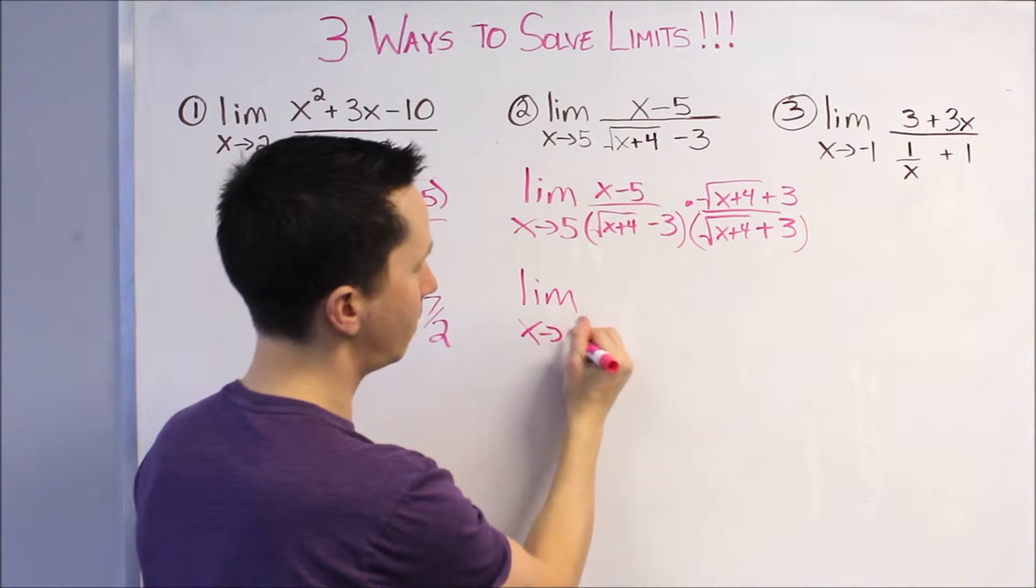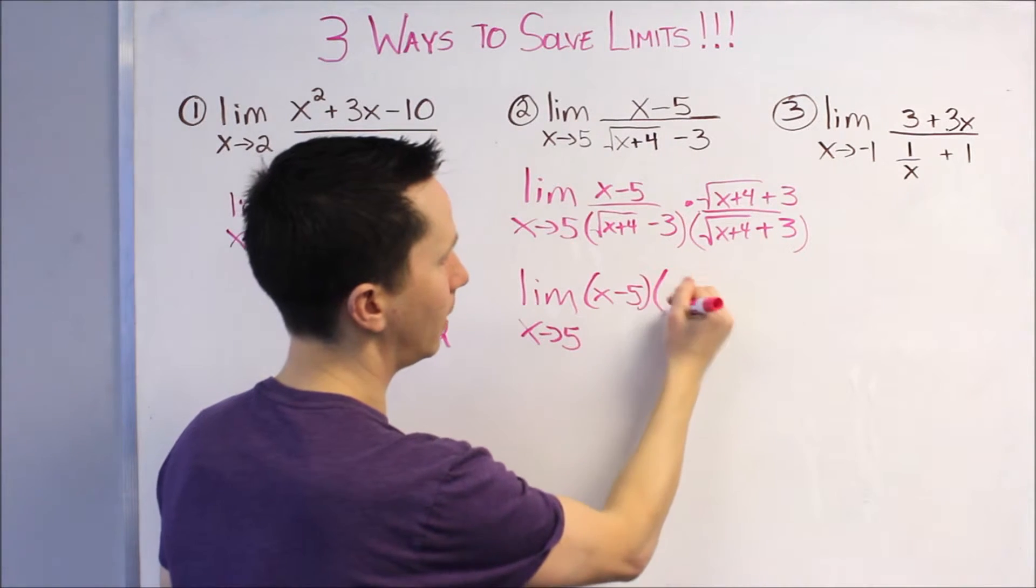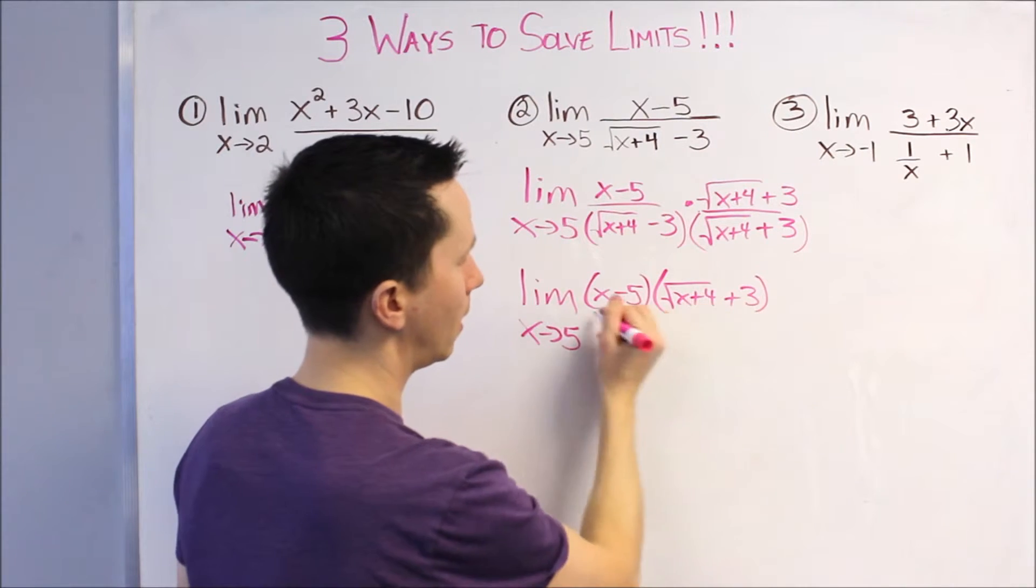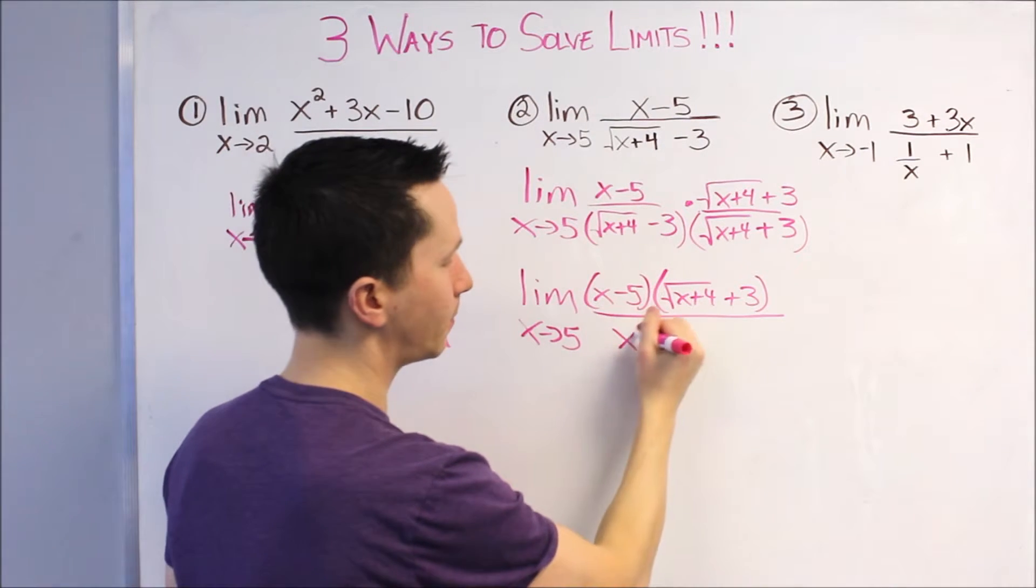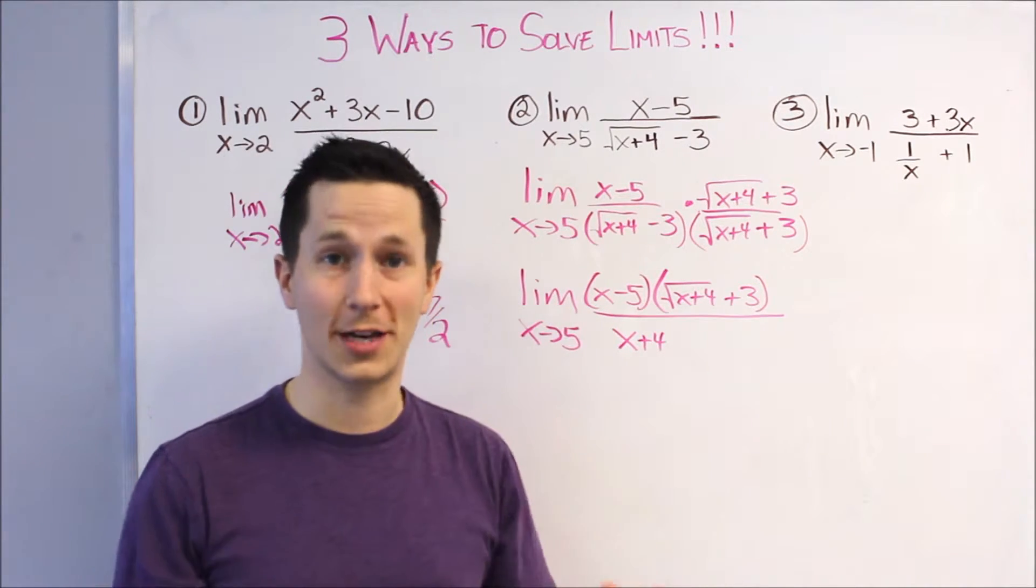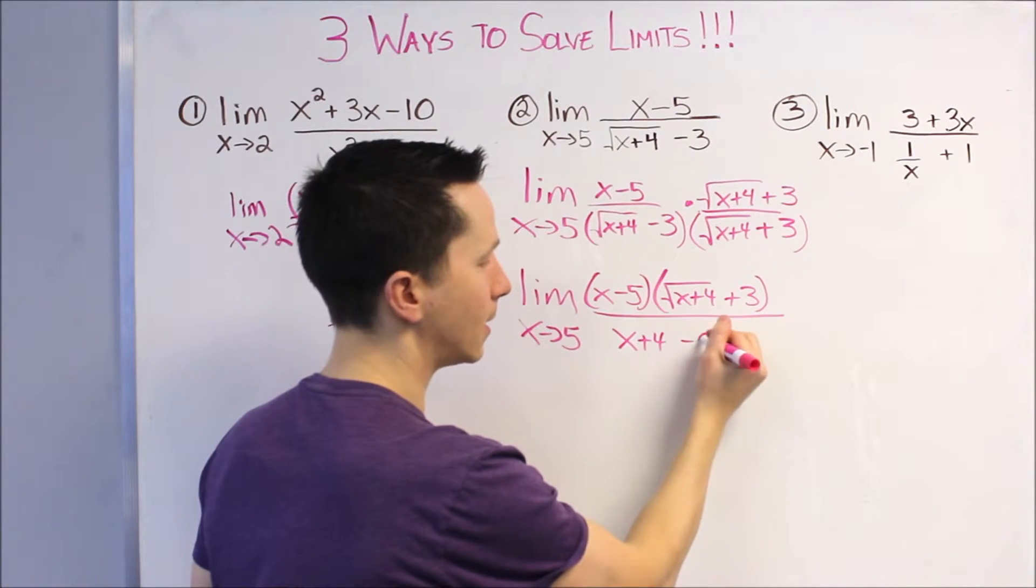This is the limit as X approaches 5. I'm not going to multiply out the top. I'm going to keep that separate. And, on the bottom, I'm going to get X plus 4. Because, the square root of X plus 4 squared is just X plus 4. And, then, I'm going to get minus 3 times 3, which is minus 9.